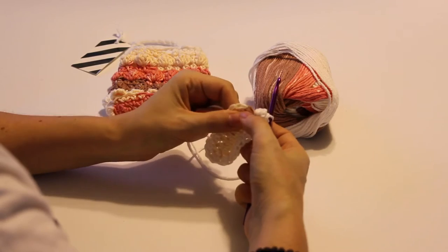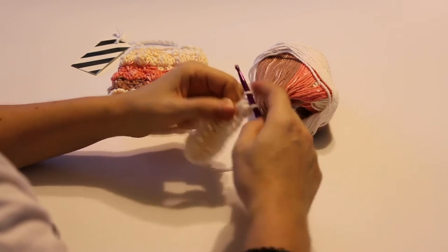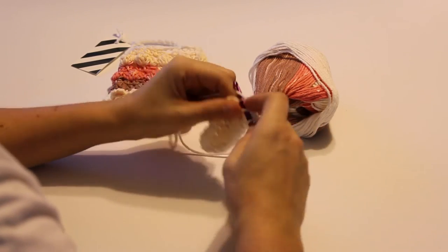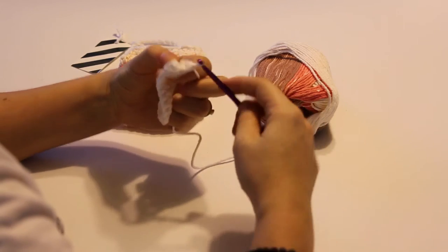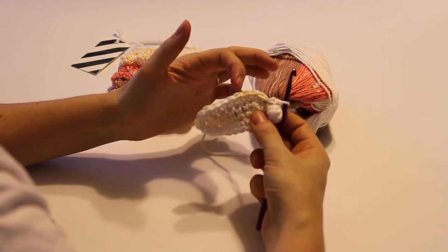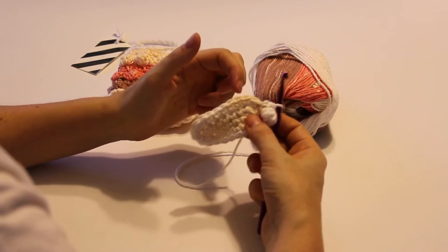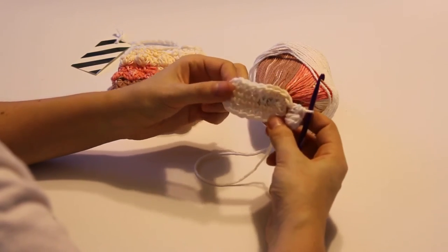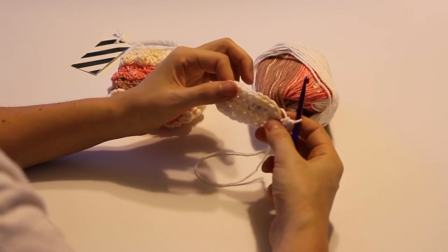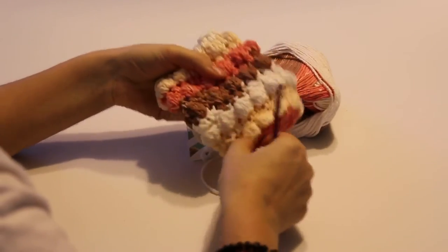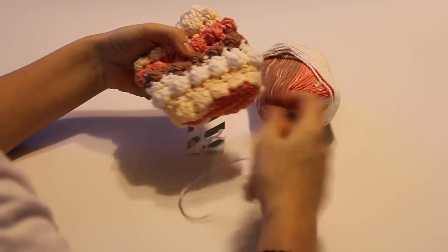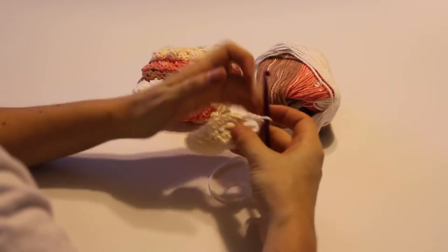And then in the next stitch working back loop only again, you're going to work a half double crochet. And you'll alternate bobble, half double, bobble, half double in the back loop only all the way around. So go ahead and finish this row, which will be this row. And then I will meet you at the join where we will work our next row.